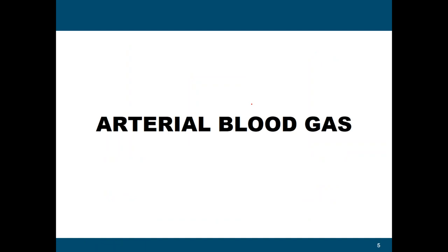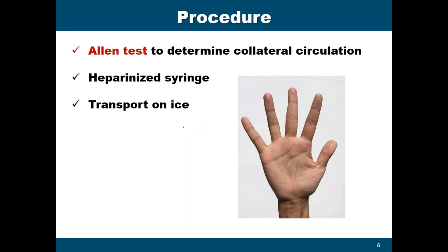The most important step before withdrawing blood for ABG analysis is to perform the Allen's test. The Allen's test is a procedure done to determine collateral circulation in the hand of your patient. The ulnar artery is found on one side of the wrist and the radial artery on the other side. ABG requires puncturing the radial artery, and the complications include thrombosis that will result in ischemia of the hand. The purpose of the Allen's test is to determine the patency of collateral circulation in your ulnar artery.